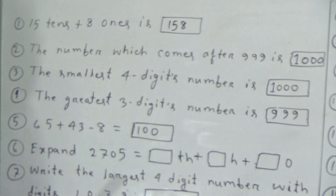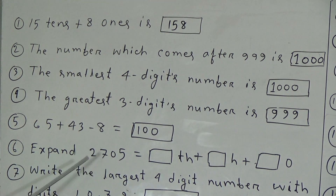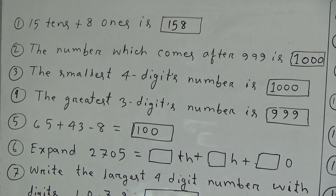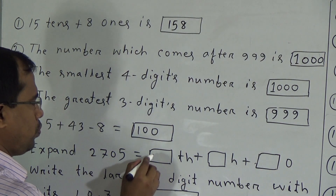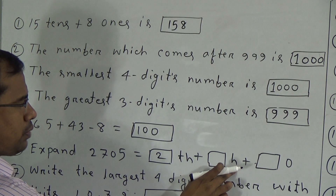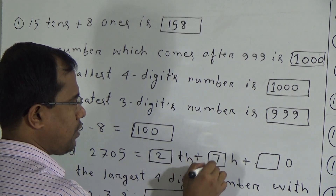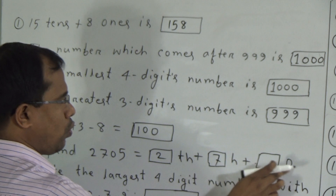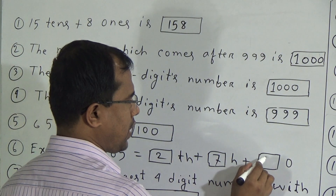Sixth question: expand 2705. Here, 2 is in the 1000s place, 7 is in the 100s place, and 5 is in the 1s place. So in 1000s place we write 2, in 100s place we write 7, and in 1s place we write 5.